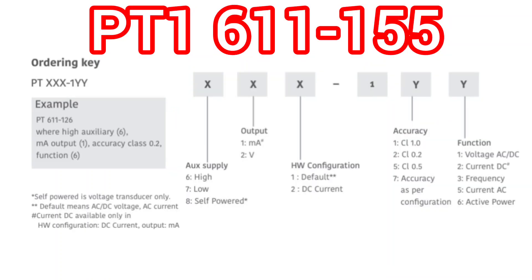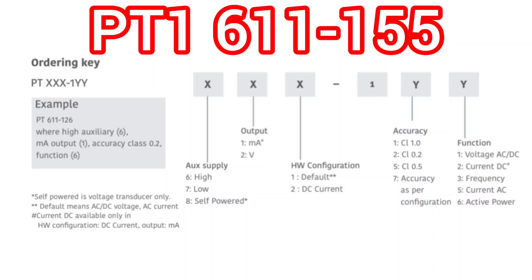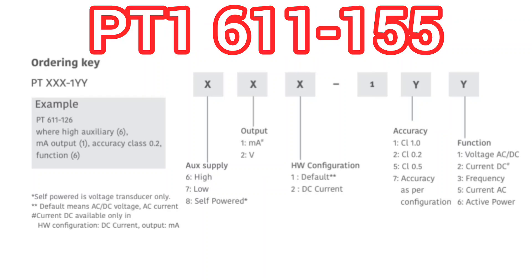With reference to the order code, we can determine the rating of the current transverser — including auxiliary supply, output, hardware wiring, accuracy, and function of the current transverser.